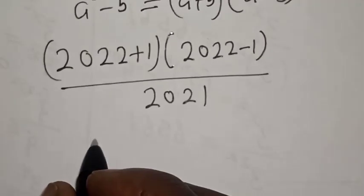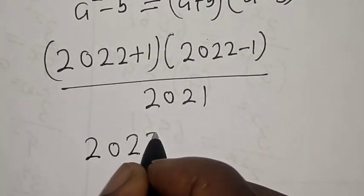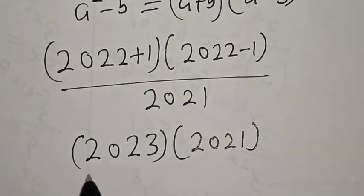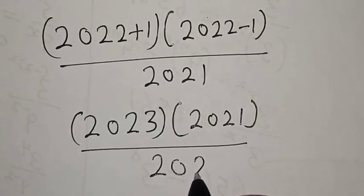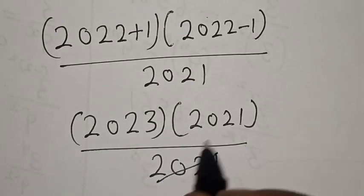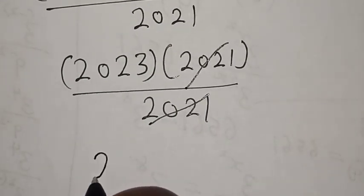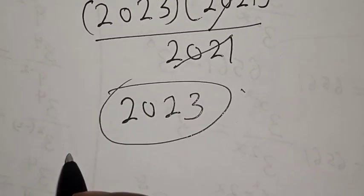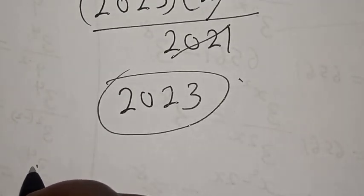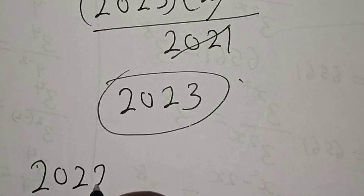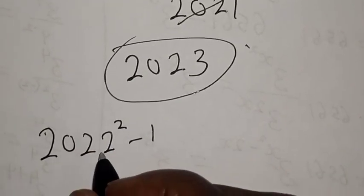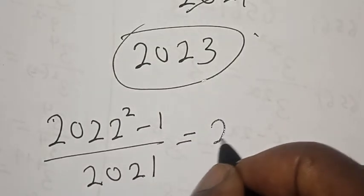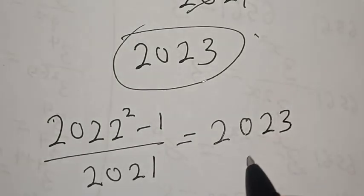2022 + 1 is 2023, multiplied by 2022 - 1 which is 2021, over 2021. Here we have 2021 over 2021 — this cancels — and we are left with 2023. Therefore our final answer is 2022 squared minus 1 over 2021 is equal to 2023.